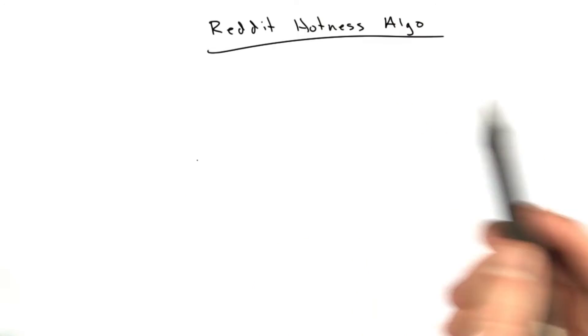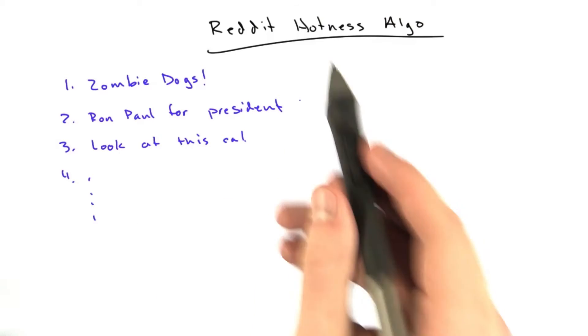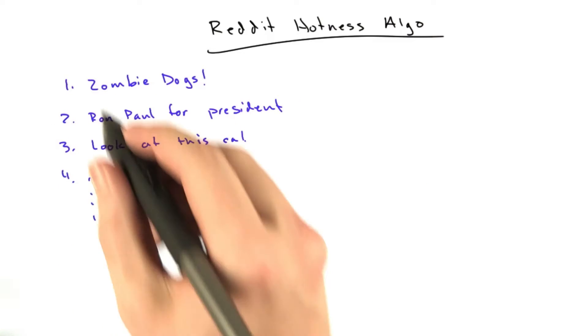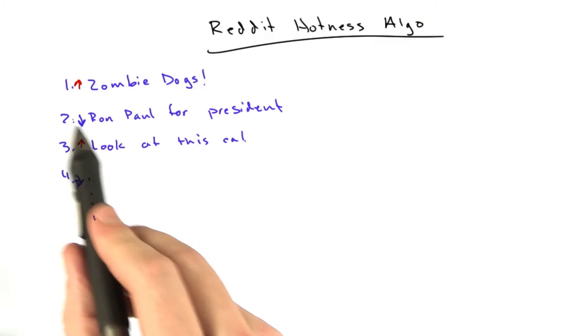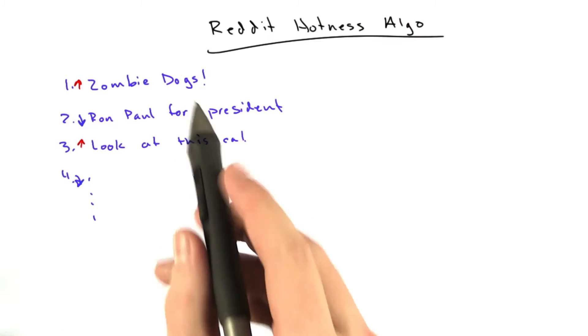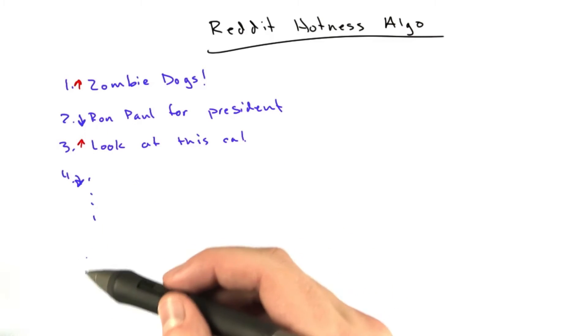If you've used Reddit before, you know it's a big list of links, and users can vote on those links up and down, and the front page is whatever is the most popular. They can be voted up or voted down, and good links stay at the top of the page for a long time, and mediocre links may make an appearance but disappear after a short while.